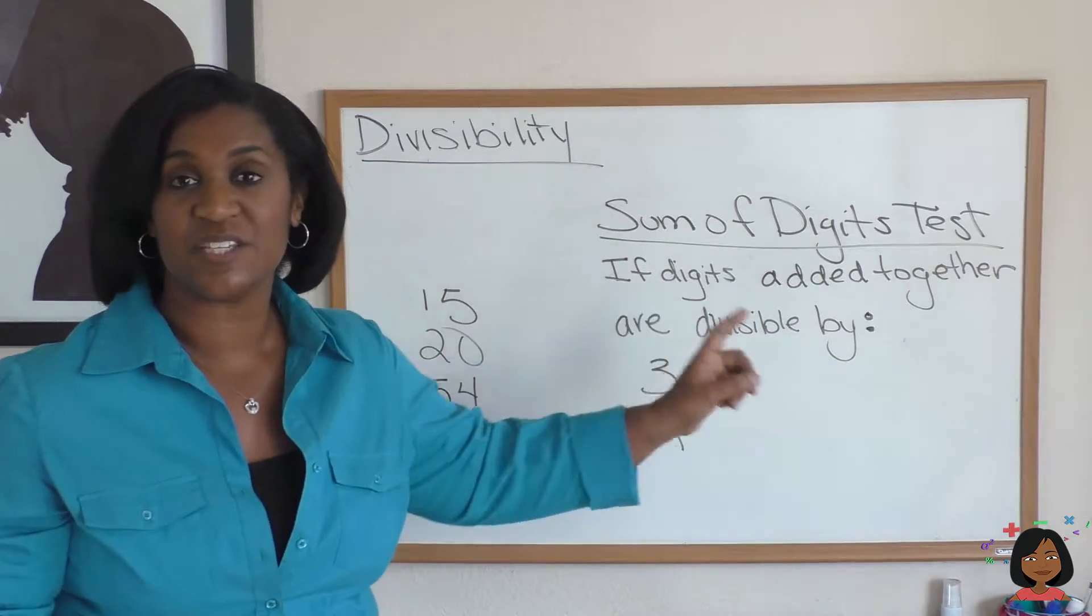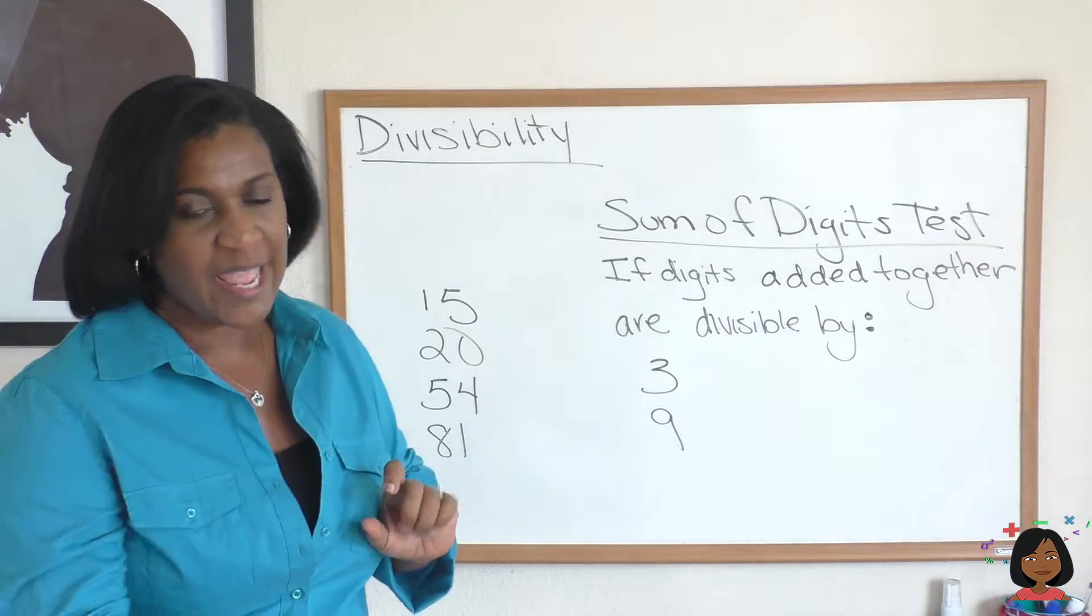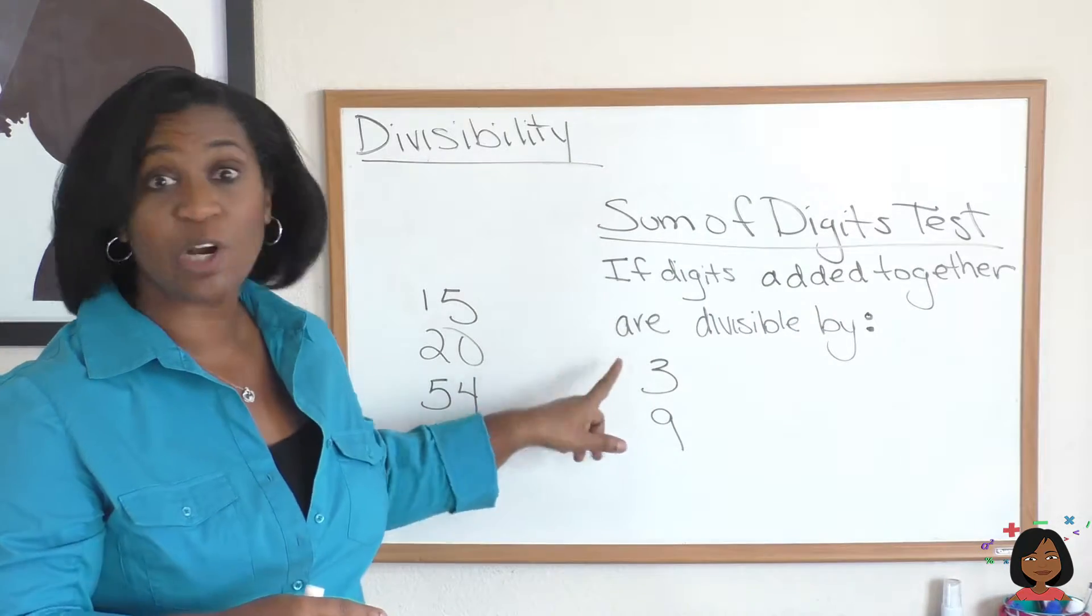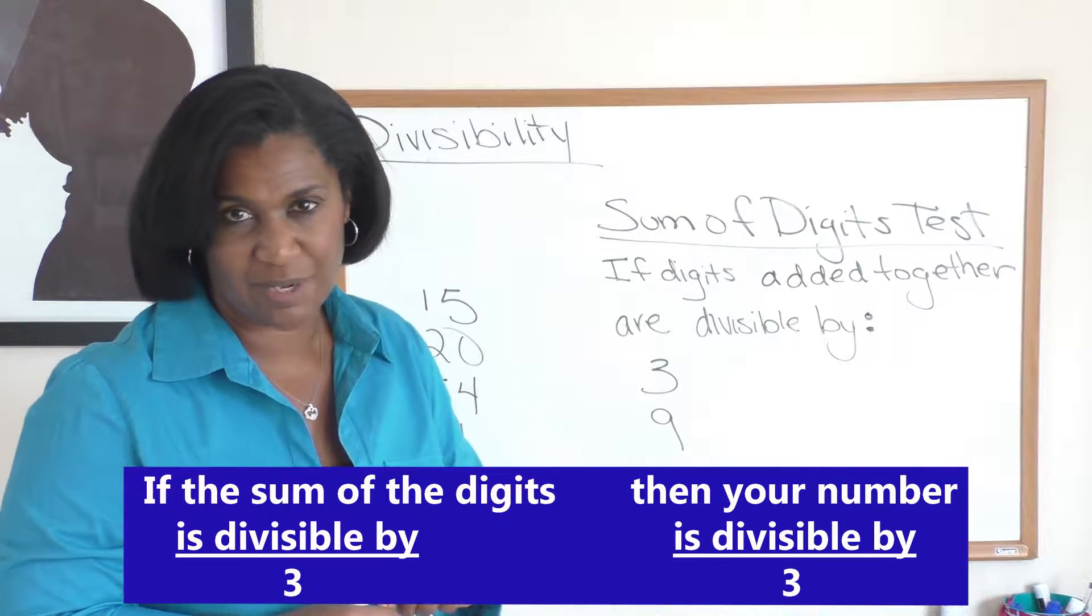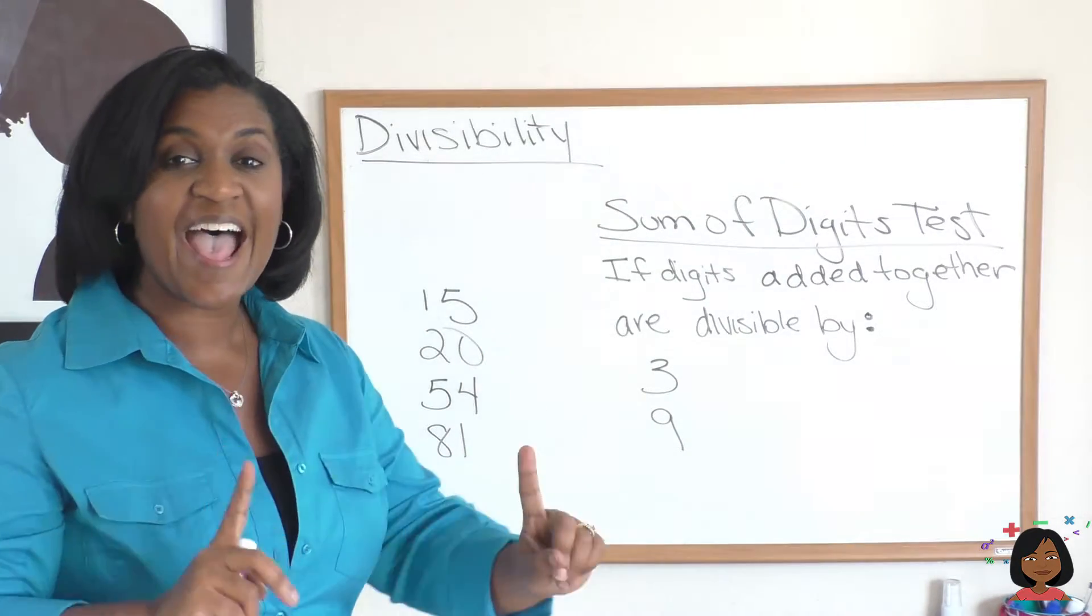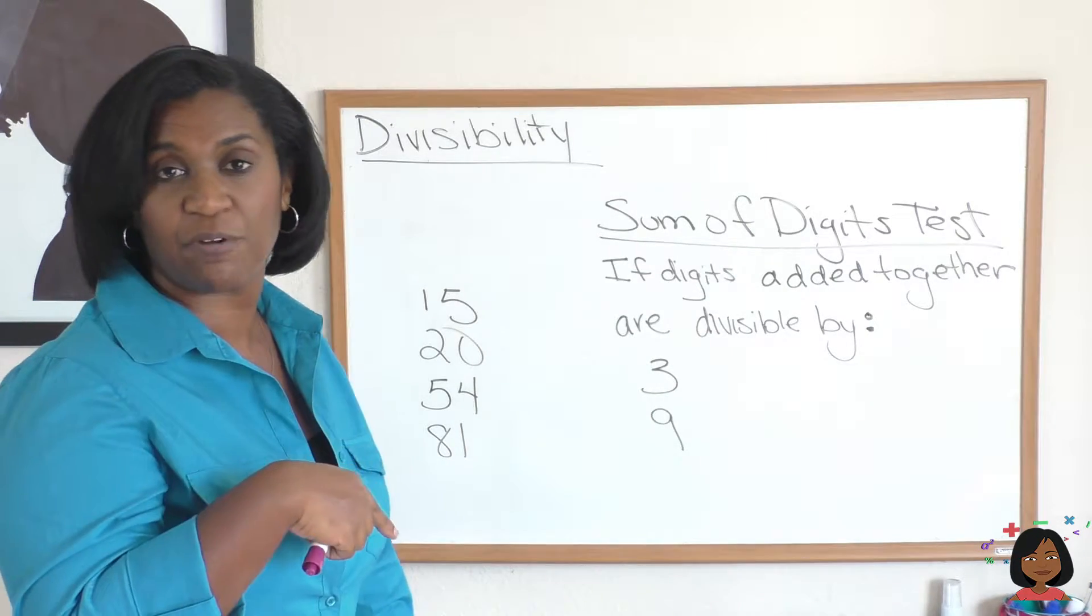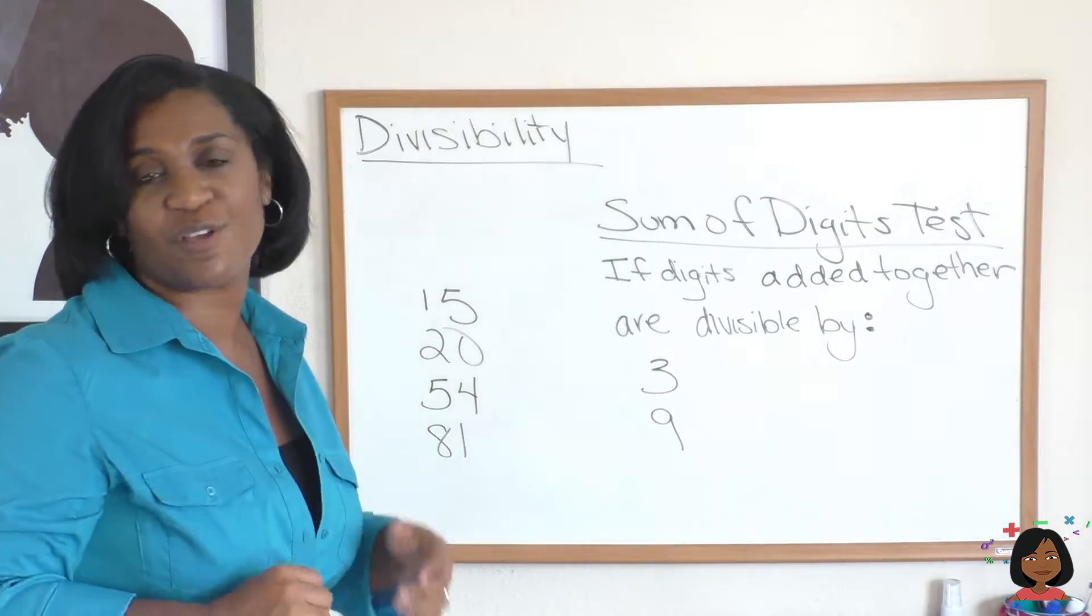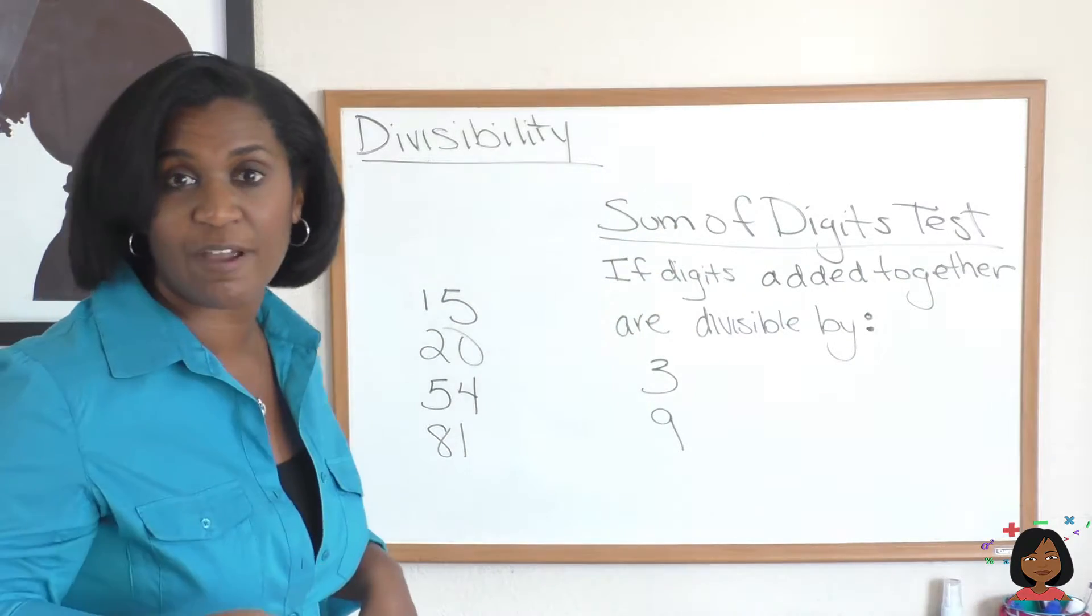Let's give you another test. This one's called the sum of digits test. Here's what it means. If you take your digits of your number and you add them together, and if that total is divisible, let's start with 3. If it's divisible by 3, then it means that your number is divisible by 3 too. Let's take a look at an example. Let's start with the number 15. Let's add the digits together. 5 plus 1 equals 6. Is 6 divisible by 3? Yes, it is. It goes in 2 times. That means 15 is also divisible by 3. That's what we mean by the sum of digits test for 3.